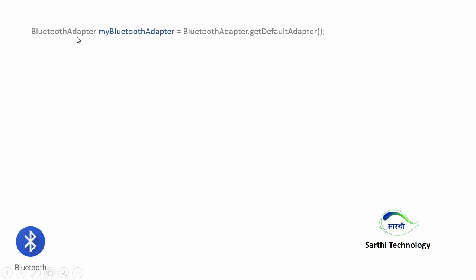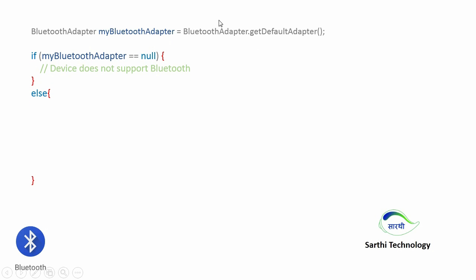First of all, we will create an object of BluetoothAdapter — in my case named myBluetoothAdapter — and initialize it using BluetoothAdapter.getDefaultAdapter(). After that, we will check using this object: if myBluetoothAdapter equals null, that means the device does not support Bluetooth and we will end here. But if the device supports Bluetooth, we will come into the else part.